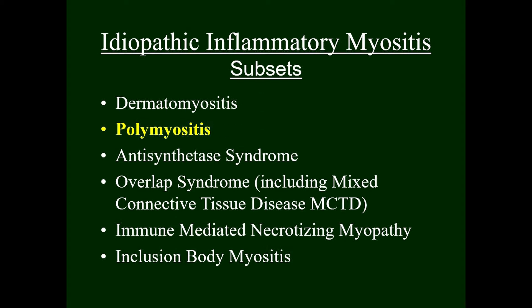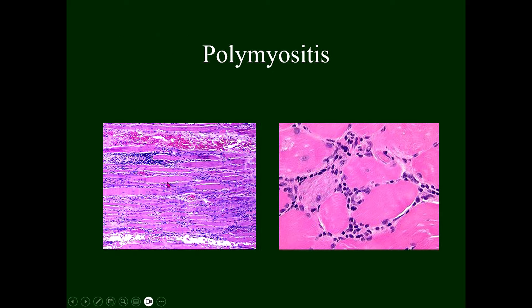Polymyositis is an inflammatory myositis without the rash of dermatomyositis. The classification of pure polymyositis is decreasing as other types of inflammatory myopathy are recognized, such as anti-synthetase syndrome, immune-mediated necrotizing myopathy, inclusion body myositis, and overlap myositis. Pathologically, the inflammation in polymyositis differs from dermatomyositis: rather than being perifascicular and perivascular, the inflammation can actually be within the muscle fibers. As with dermatomyositis, there is cell death, atrophy, and variation in fiber sizes.